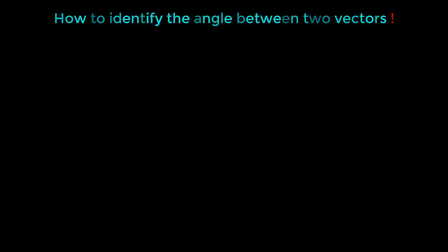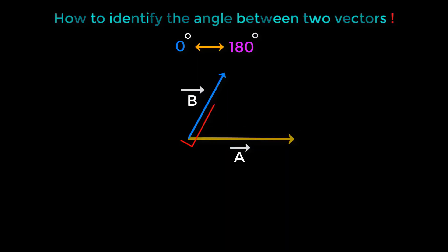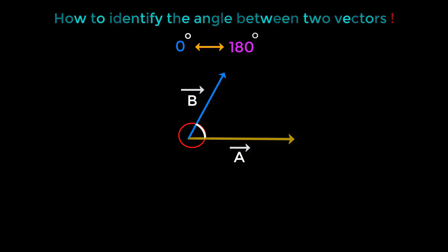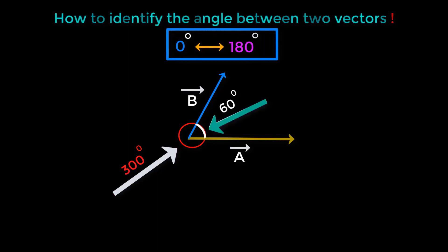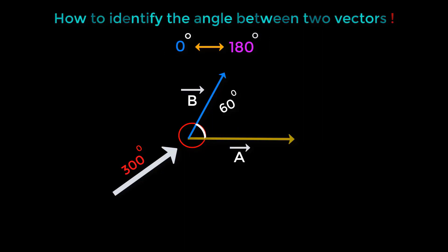The angle between two vectors always lies between zero degrees and 180 degrees. See, this is vector A and this is vector B. Between these two vectors there are two angles. If this angle is 300 degrees then this angle must be 60 degrees. This angle is greater than 180 degrees, but this angle is between zero degrees and 180 degrees, so this angle will be the angle between these two vectors.